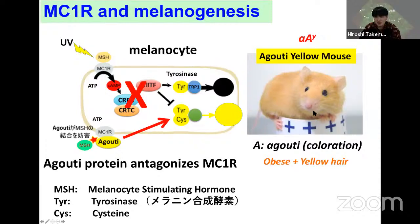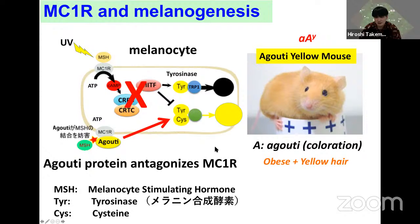This also has another base phenotype, because MSH also regulates appetite in the brain. Overexpression of agouti protein blocks appetite regulation, so overeating makes the mice obese.